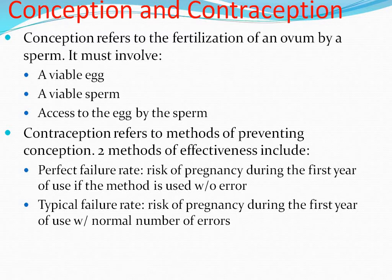Two methods of effectiveness include: Perfect failure rate — the risk of pregnancy during the first year of use if the method is used without error. Then typical failure rate — the risk of pregnancy during the first year of use with the normal number of errors.